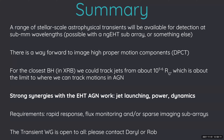There is a way to image the high proper motion components — this method which Callum Wood has called dynamical phase center tracking. For the closest black holes with jets, which are those in the X-ray binaries, we could track the jets from about 10^5 gravitational radii, which almost perfectly overlaps the distances to which you can track the ejector from launch to termination for an AGN. So there are very strong synergies between the AGN work and the stellar mass black hole work. Our requirements are rapid response, flux monitoring, and possibly sparse imaging sub-arrays.